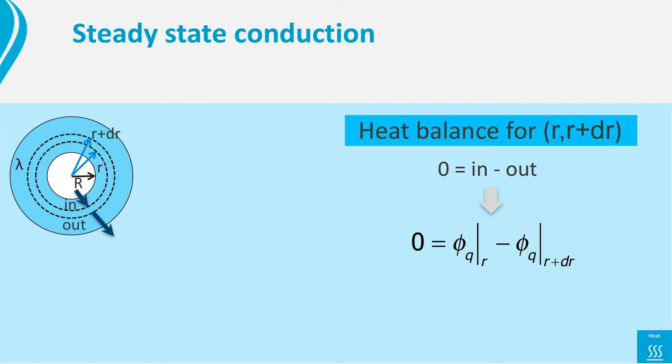But there is a difference. The area through which the heat flows in is now the area of a sphere with radius r. It is 4πr².